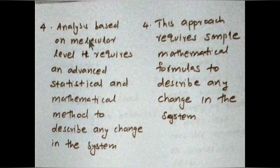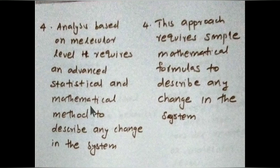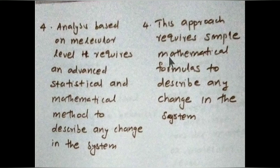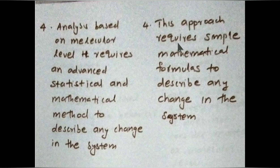The next difference concerns the analysis method. In the statistical approach, analysis is done at the molecular level and requires advanced statistical and mathematical methods to describe any change in the system. Since we are dealing with a large number of entities, many mathematical equations and calculations are needed. In the classical approach, only simple mathematical formulas are required to describe any change in the system, since there is only one entity to solve.